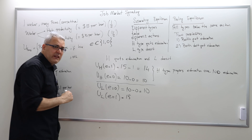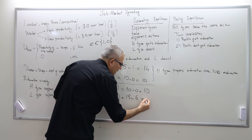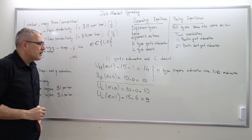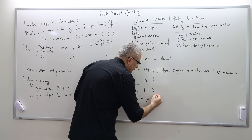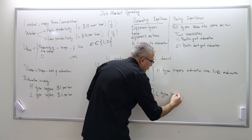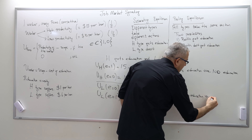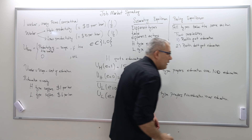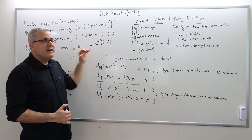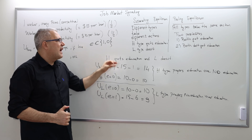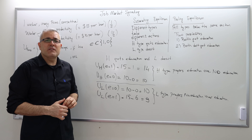So firms would pay $15, but because the education cost is $6, the net utility is only $9 — which is less than the $10 achieved without education. So the low type prefers no education over education. In conclusion, in this problem there is a separating equilibrium in which the high productivity worker gets education and the low type worker doesn't.